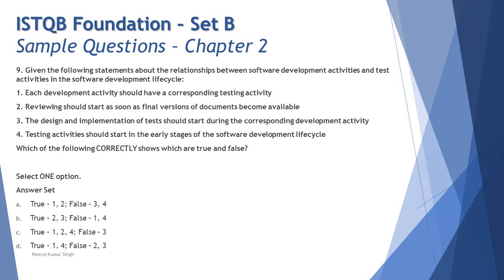Statement number one says: each development activity should have a corresponding testing activity — and yes, that's absolutely correct. We look forward to alignment with development activities and push our test teams to be present at development phases to review work products when they're available early in the life cycle. So statement one is absolutely correct. Statement two says: reviewing should start as soon as final versions of documents are available.